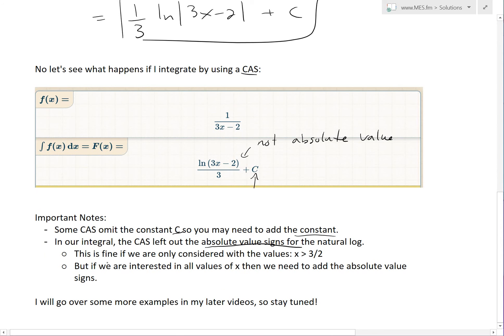Now this is important to know that this is fine if we're only considered for the values x is greater than 3 over 2. So that basically 3x minus 2 is greater than 0. Because you can't have ln of 0 or less than 0. So rearrange this, we get, well, x, move this 2 to the other side, 2 over 3, and divide it out. That's where I get this from.